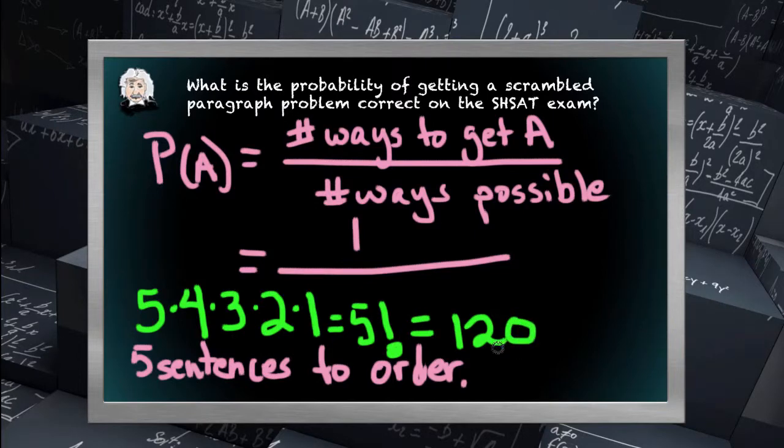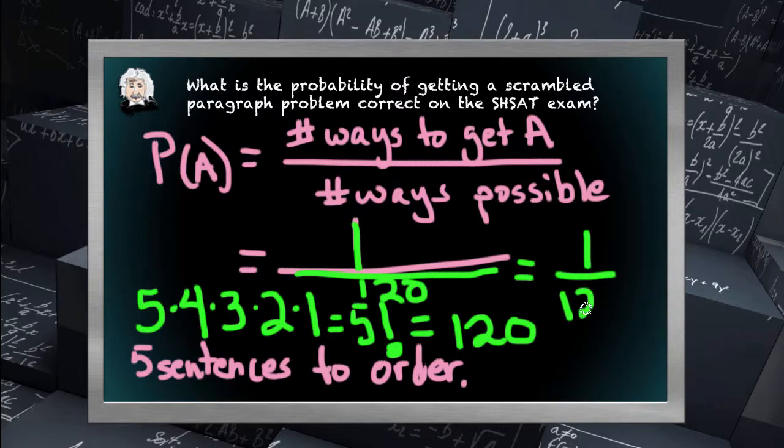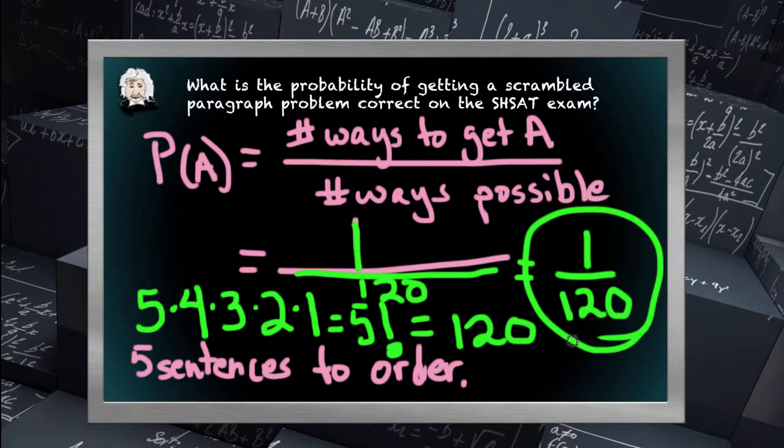So there are 120 possible ways, in total, or possible answer choices, for guessing a scrambled paragraph problem. Which means our denominator now becomes 120 in the probability. So your odds of getting the correct answer, not knowing anything special about the problem, is 1 in 120 on a scrambled paragraph. Or if you want to think about it, it is 24 times worse than a math problem. Wow! No wonder people think scrambled paragraphs are hard, because mathematically speaking, they are hard to get correct.